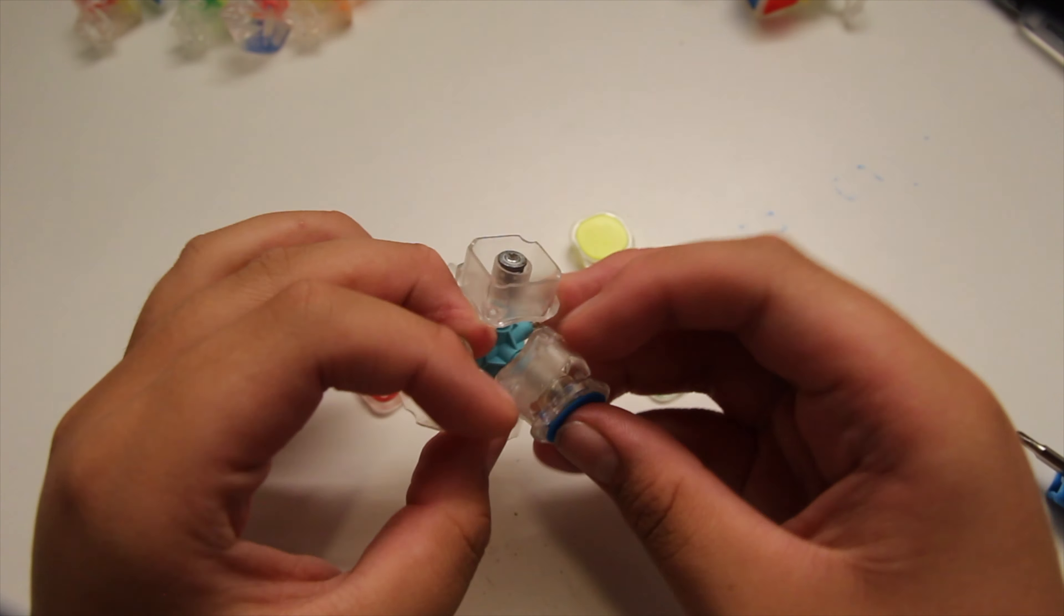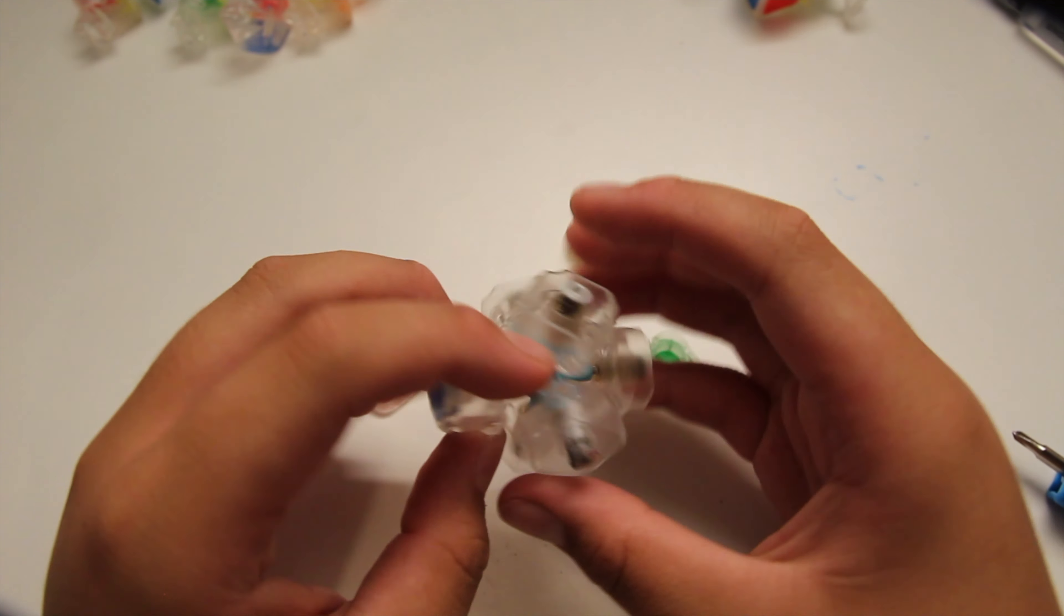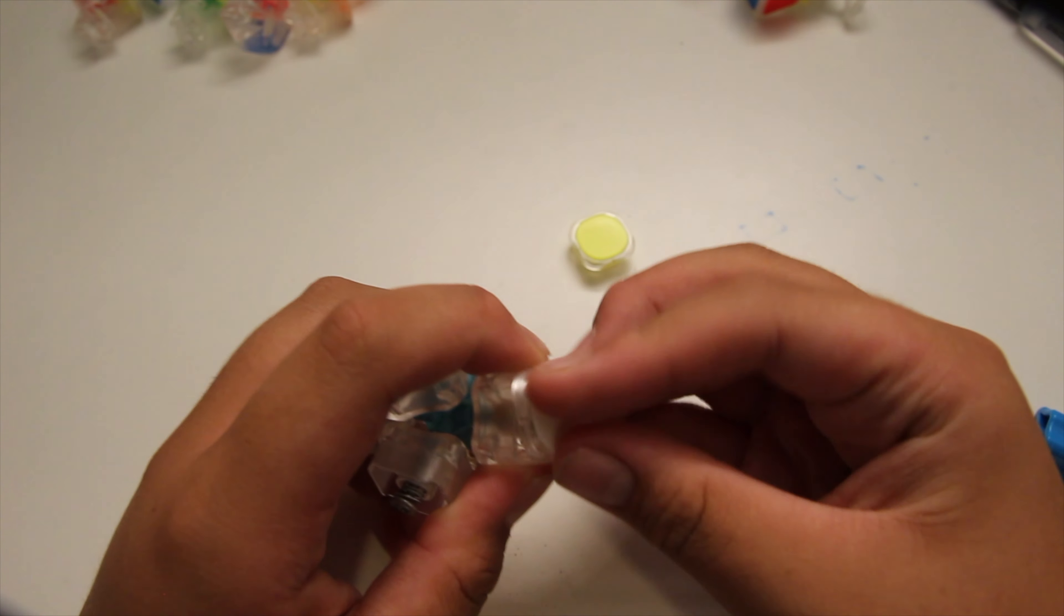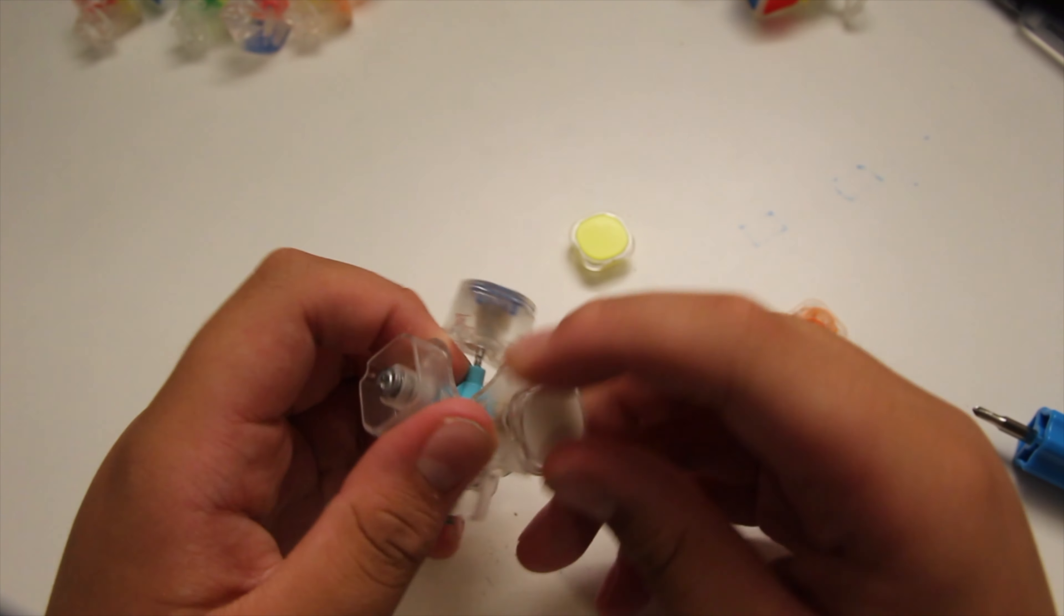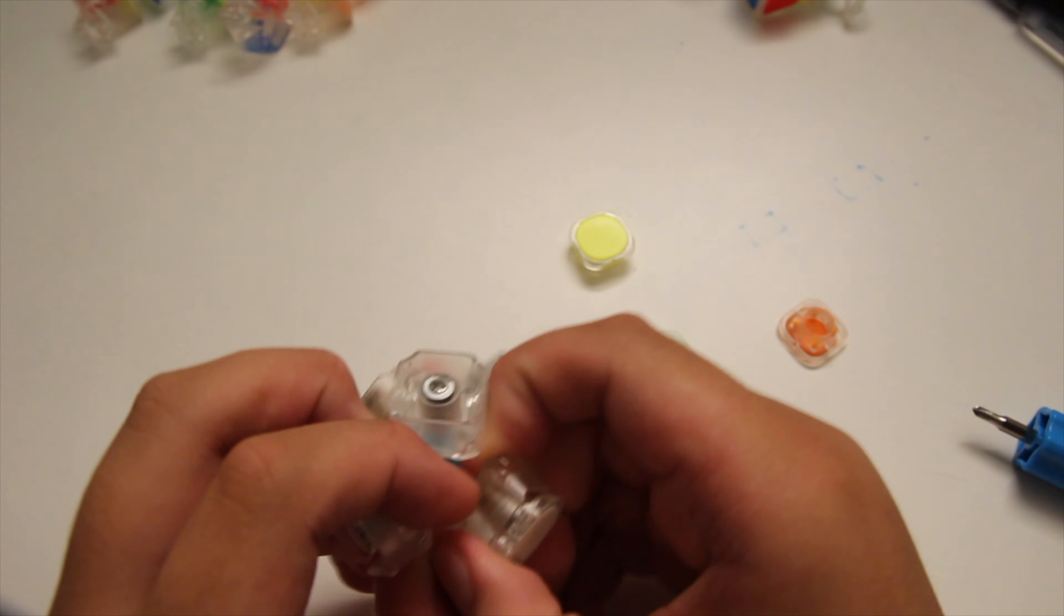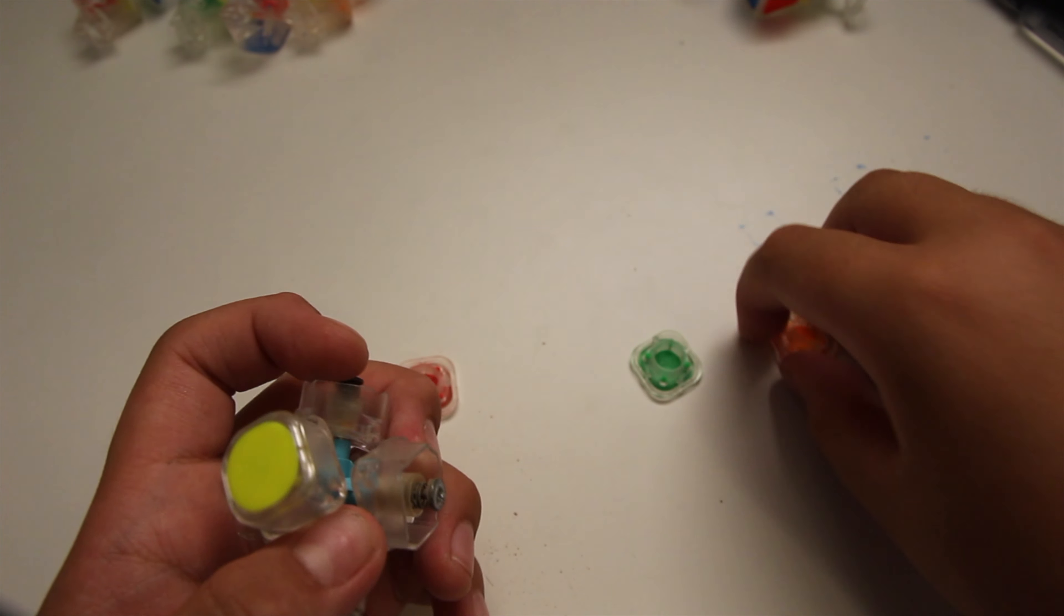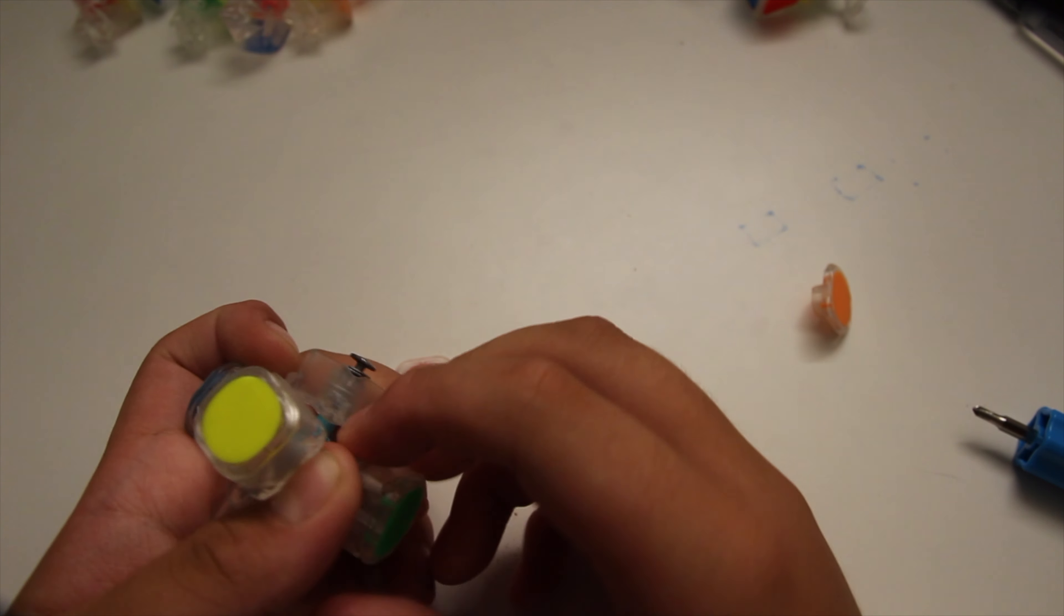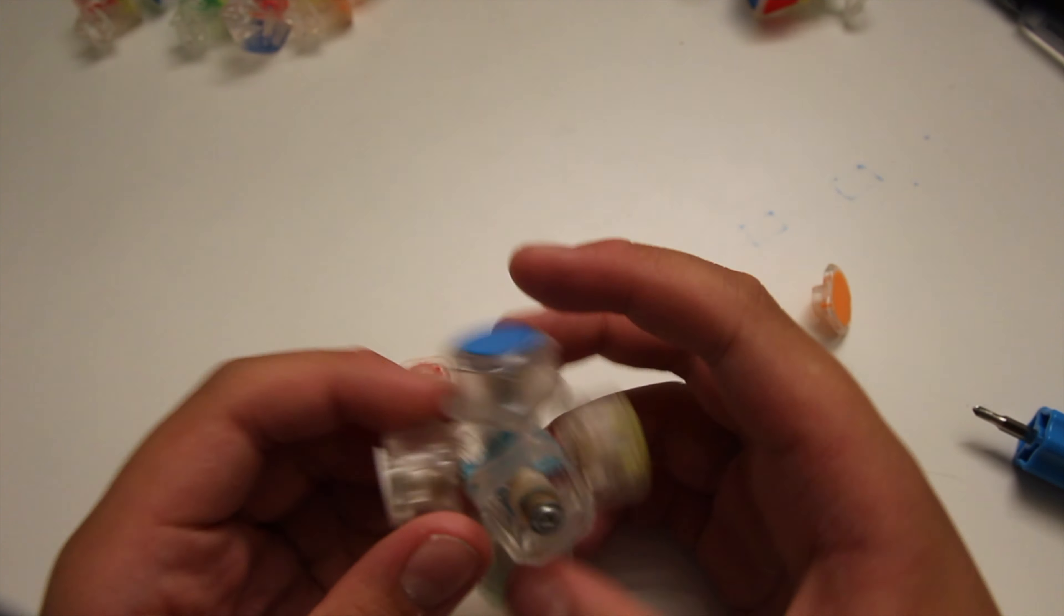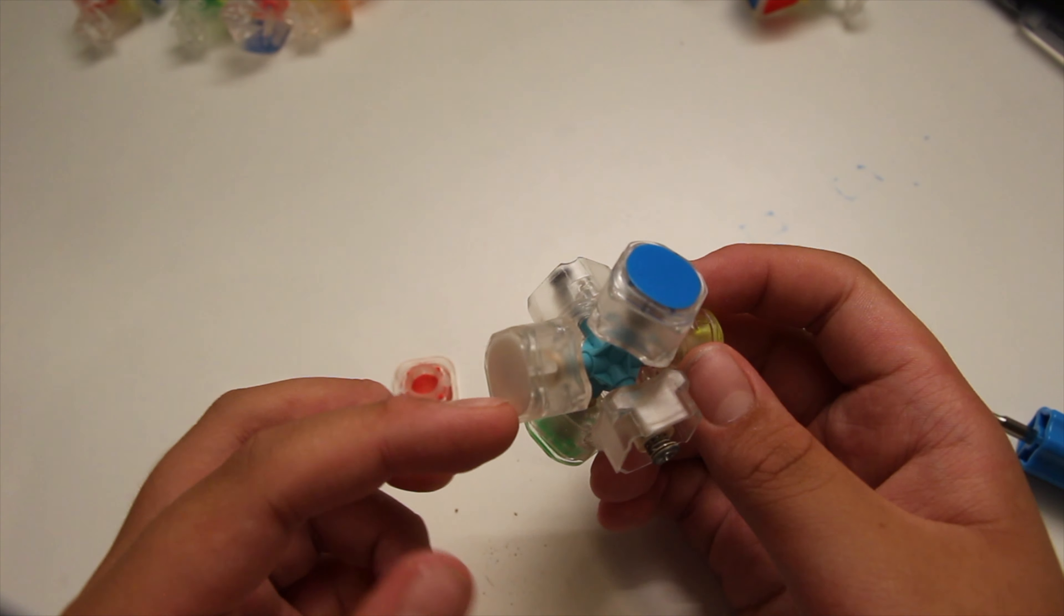So just do that for all sides. Once you make sure that all the tensions are even, put back the center tabs on. Make sure the color scheme is right. Now you would have white opposite yellow, blue opposite green.